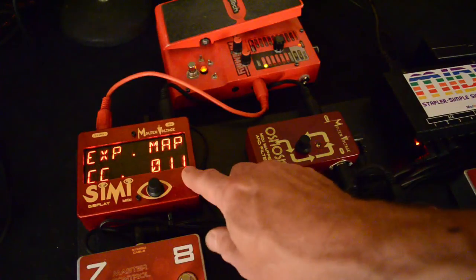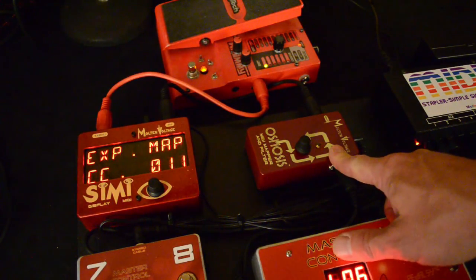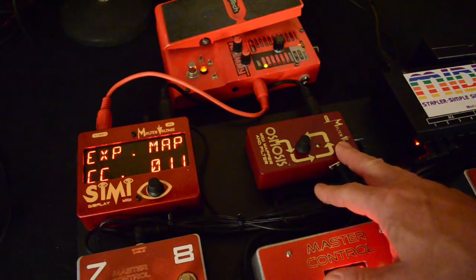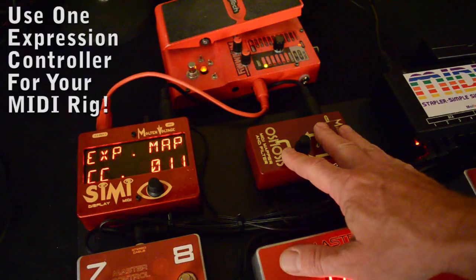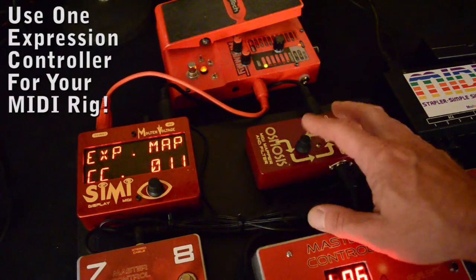Expression Map CC. This is the incoming expression controller value that's going to get remapped, and you can remap an expression controller separately for each program. Normally an expression controller is CC 11, so that's what the default is.